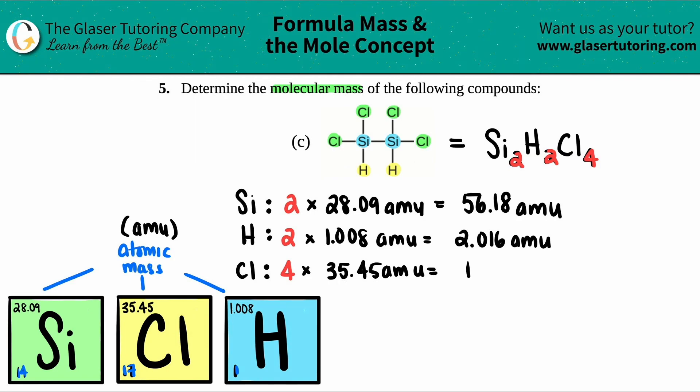Now we want to find the molecular mass of the whole compound. So what are we going to do with these numbers, guys? Yeah, if we try to find the total, we need to add up all of the values. So I'm just going to add these three values up, and that's the total molecular mass of the entire compound.